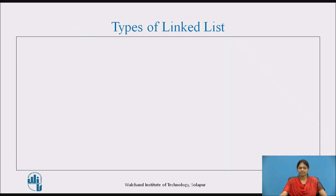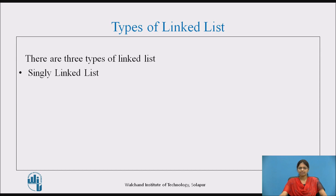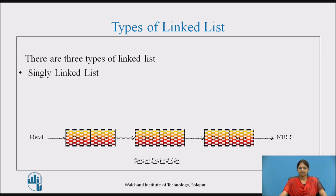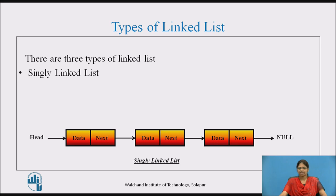Types of linked list: There are three types of linked list — a singly linked list, which contains a single link to the next node.